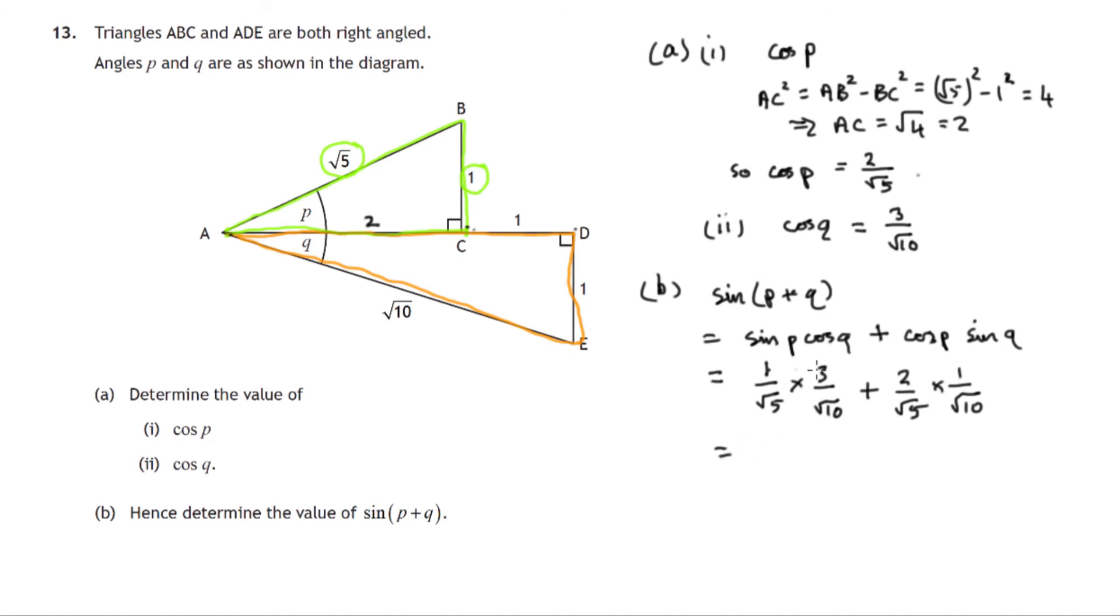So we're getting there. Multiplying fractions. Multiply the tops. 1 times 3. Root 5 times root 10 would be root 50. Plus 2 times 1 is 2. Root 5 times root 10 is root 50. So if we've got 3 over root 50 plus another 2 over root 50, we'd have 5 over root 50.